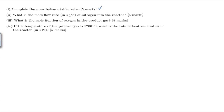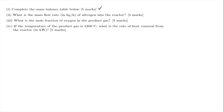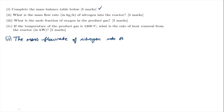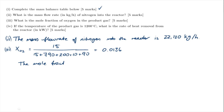The first question was to complete the mass balance table, which we did on the previous slide. The mass flow of nitrogen into the system is 22,120 kg per hour — we write out that answer statement to get the marks. Part 3 is to find the mole fraction of oxygen in the product gas: 15 kmol/hr of unreacted oxygen divided by the total molar flow out of the system. We write out the answer statement for full marks.